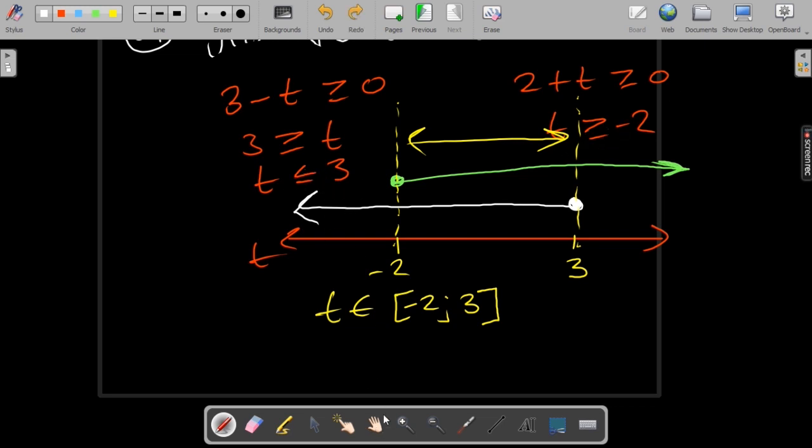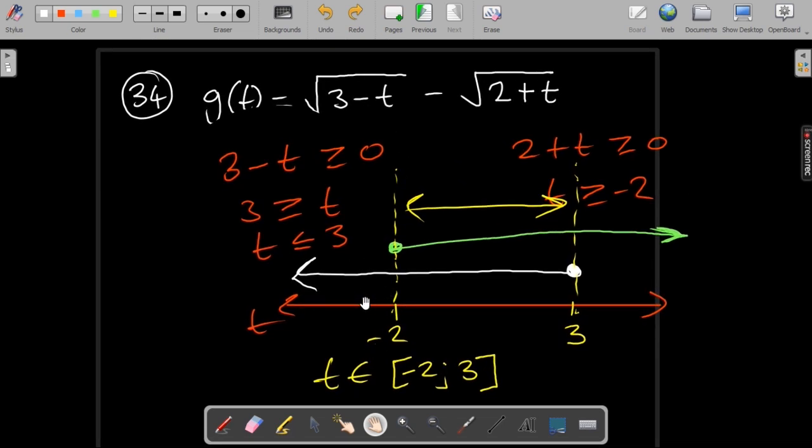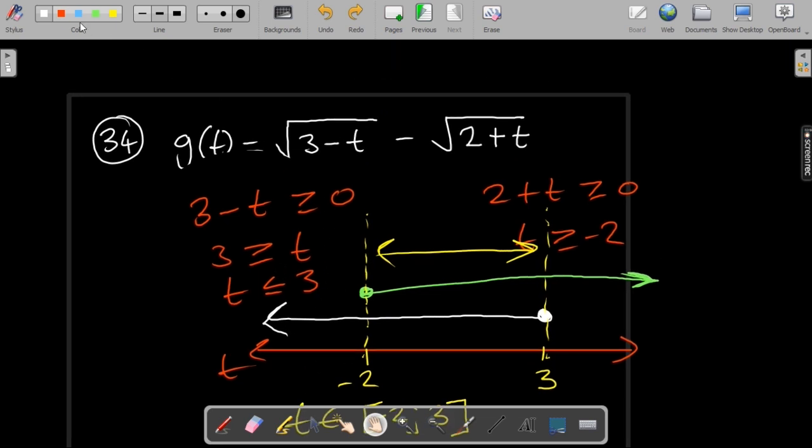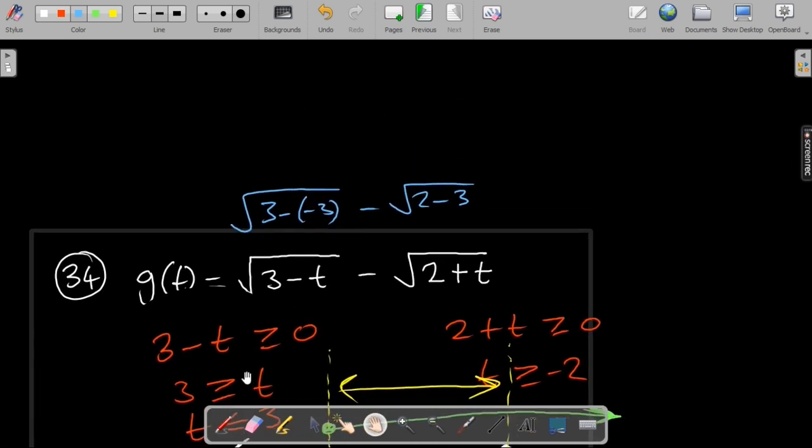So as an example if we were to pick a t value which was to the left of minus 2, so let's say minus 3. Let's try that and see what happens to our function. So 3 minus minus 3 minus square root of 2 minus 3. Here we'll have the square root of 6, then here 2 minus, here we have the square root of minus 1 which we do not want or which we can't find on the real axis. So this part is undefined which means the whole function is undefined.